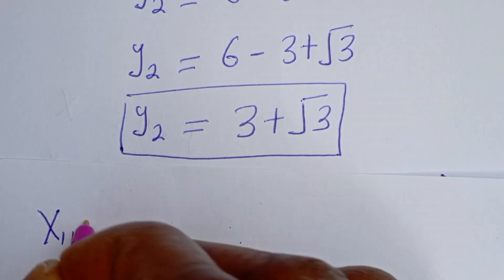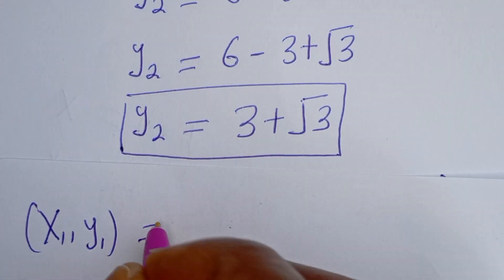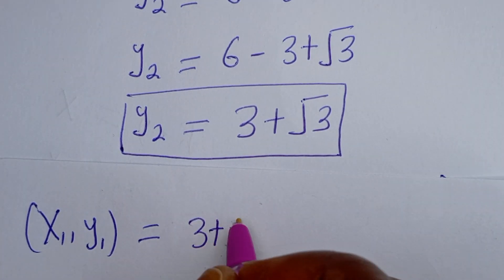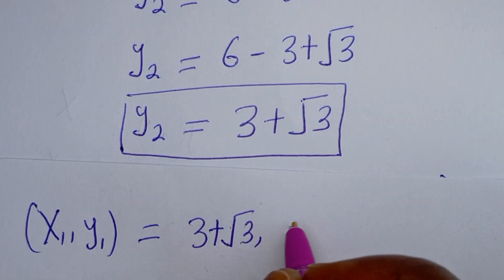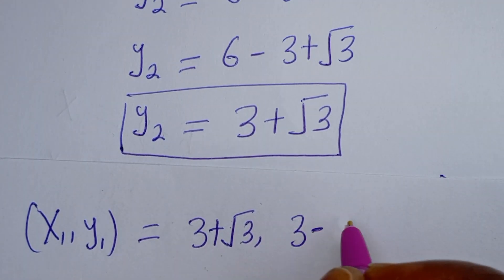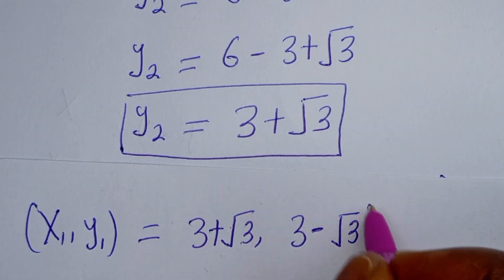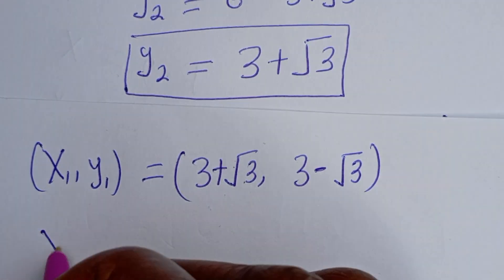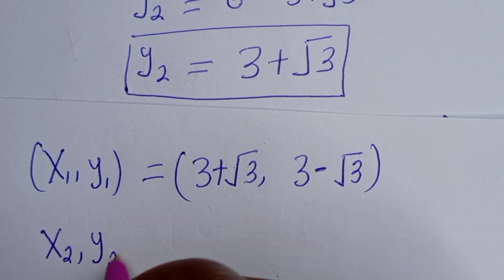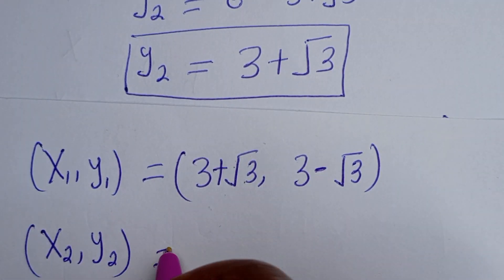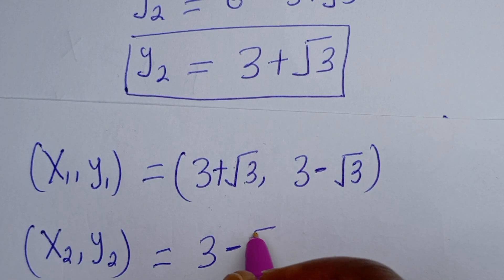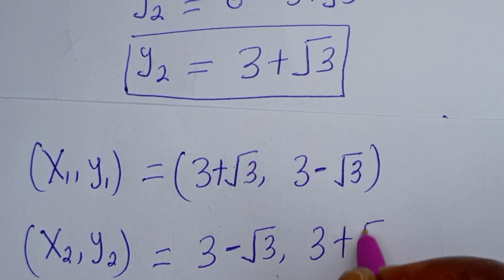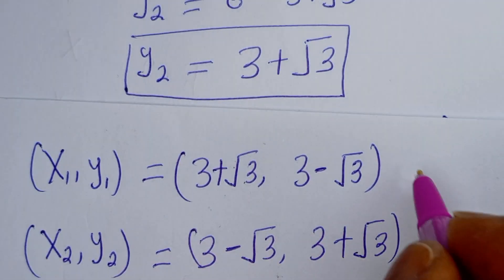So the final answers are: s1 comma y1 equals 3 plus root 3 comma 3 minus root 3, and s2 comma y2 equals 3 minus root 3 comma 3 plus root 3. Let's check to confirm these answers are correct.